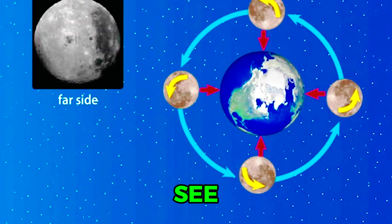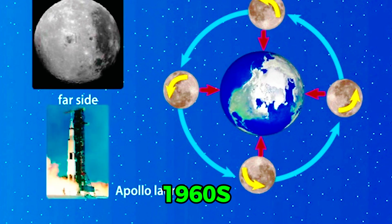Humans did not see the dark or far side of the Moon until the space flights of the 1960s and 1970s.